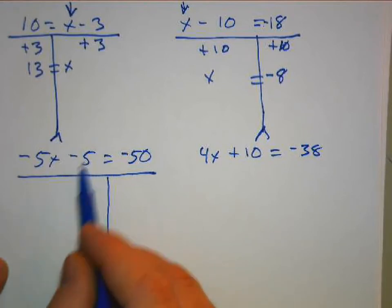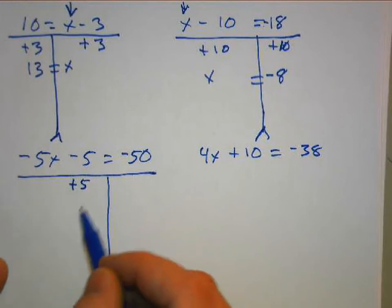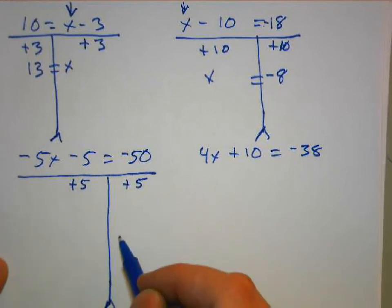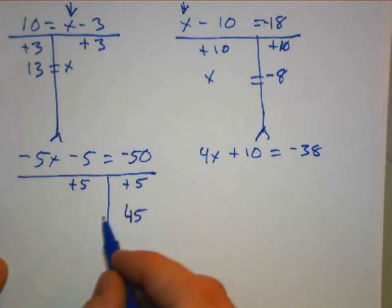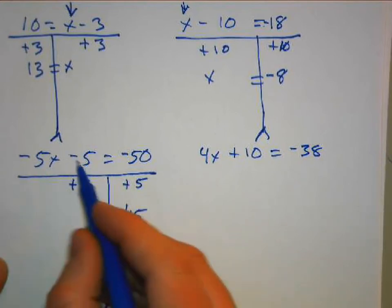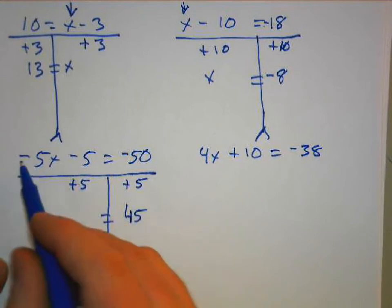Negative 50 plus 5 is 45 equals... What's negative 5 plus 5? It's 0. So what's left? Negative 5X. And we got to make sure that we don't lose stuff. We got to bring it down.